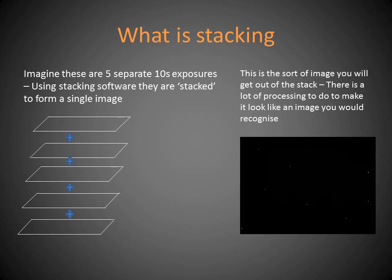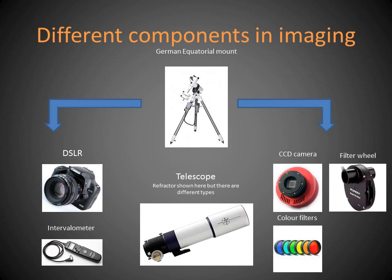The main component is a German equatorial mount — I started off using an HEQ5 by Skywatcher. You need a mount that is able to track; it needs motors in the RA and Dec axes, it needs to be able to be hooked up to a computer, and it needs to have an auto-guide port because eventually you need to be looking at long exposures and guiding. There are two main ways of looking at deep sky imaging: on the left is with a DSLR and an intervalometer, which means you don't even need a computer — you can set a number of exposures at a set time length directly on the camera.